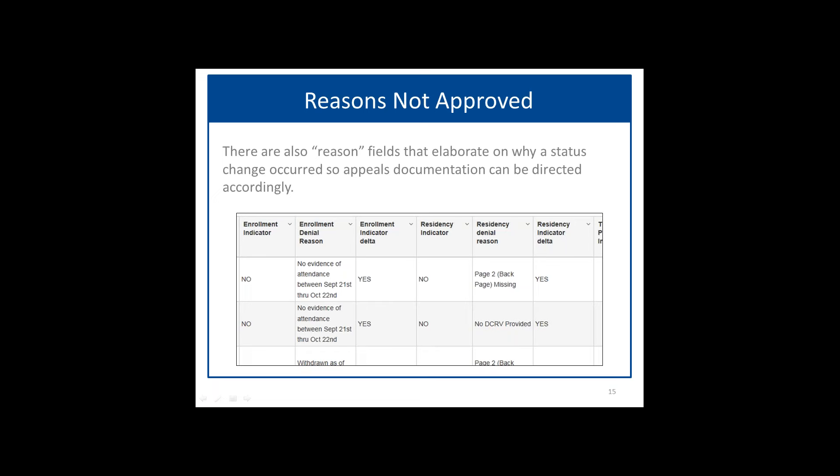I've seen comments about the enrollment grade level delta — it looks like there are many yeses but no apparent change. That's something I will take offline and review to make sure that flag is working appropriately. What it should be doing is comparing the October 5th grade level to the grade level verified by the auditors and highlighting differences. Thank you for flagging that — I'll look into it.